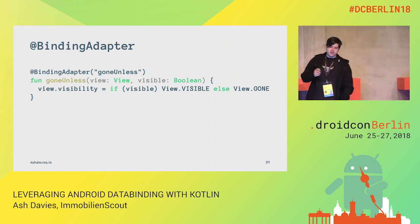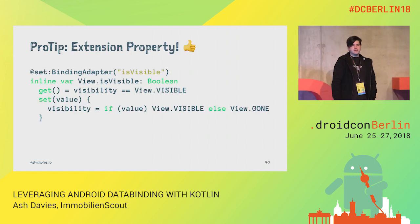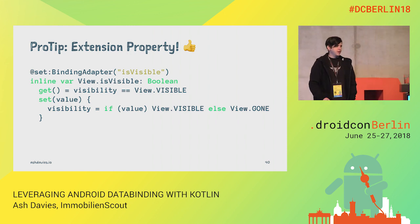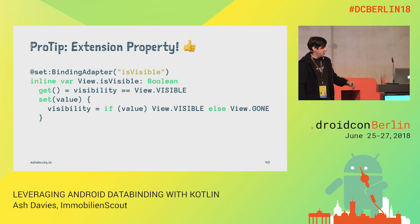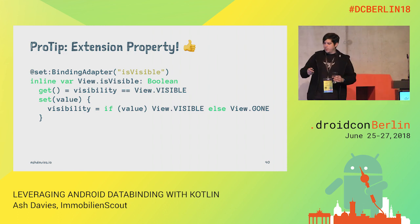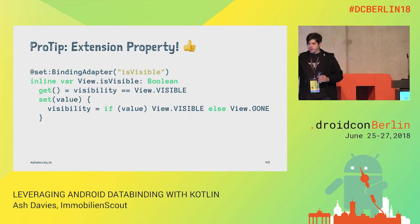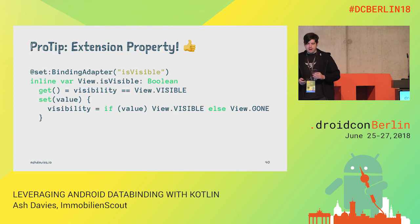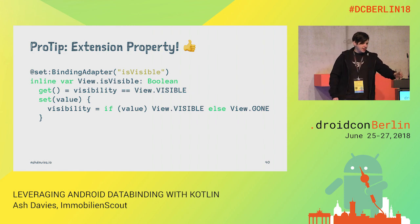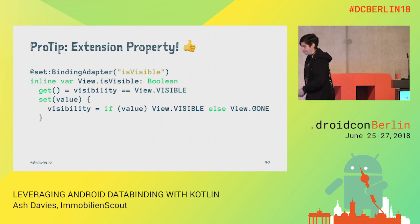Furthermore, we can make use of Kotlin extension functions. This is an example of an extension function available in the Android KTX library, so we can actually access the visibility of a view based upon whether it's visible or gone — accessible both programmatically and in our declarative layouts.